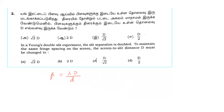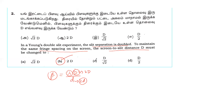Since the slit separation d is doubled to 2d, and the fringe spacing must remain the same with lambda constant, capital D must also be doubled to 2D so that the ratio lambda D over d remains unchanged. Therefore, the new screen-to-slit distance is 2D.